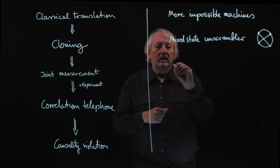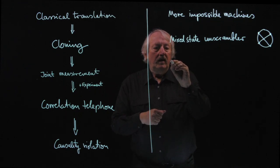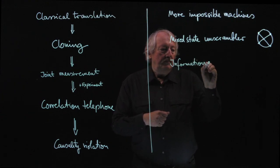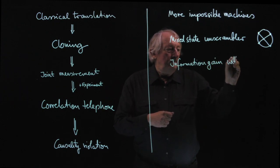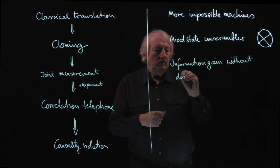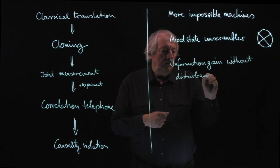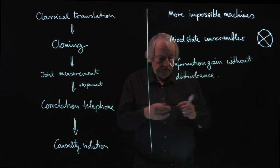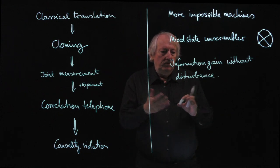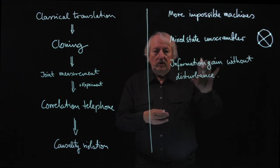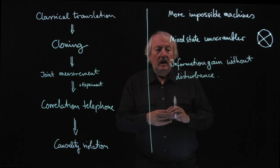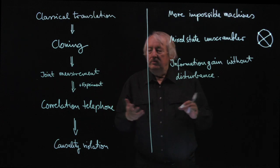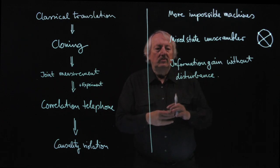Another thing that is impossible in quantum mechanics is information gain about the system without disturbance. Any kind of interaction — if you want to extract any information from a quantum state or quantum system — you must introduce some disturbance; you're always changing the state. That's a very general and extremely useful principle, but you really need the structure of quantum mechanics here. It's not something that follows just from empirical facts alone — the structure of quantum mechanics tells you that.